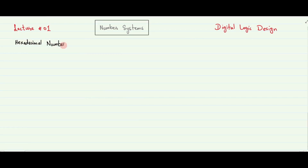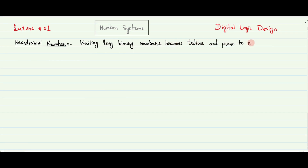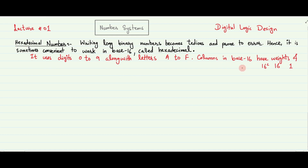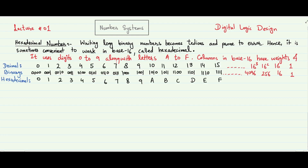Our third topic in number systems is hexadecimal numbers. Writing long binary numbers becomes tedious and prone to error. Hence, it is sometimes more convenient to work in base 16, which is called hexadecimal. Hexadecimal numbers use digits 0 to 9, along with the letters A to F. Columns in base 16 have weights of 1, 16, 16 squared, 16 cubed, and so on. This table shows the conversion between hexadecimal, decimal, and binary numbers. Note that hexadecimal letters A and F are equivalent to 10 and 15 respectively in the decimal number system.